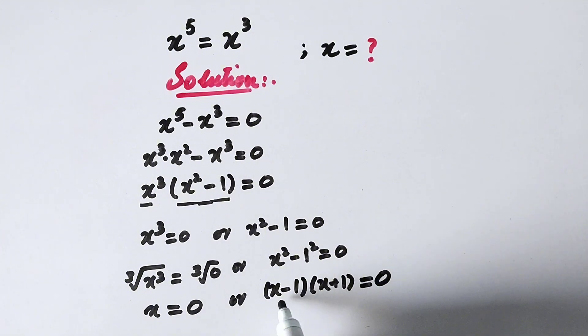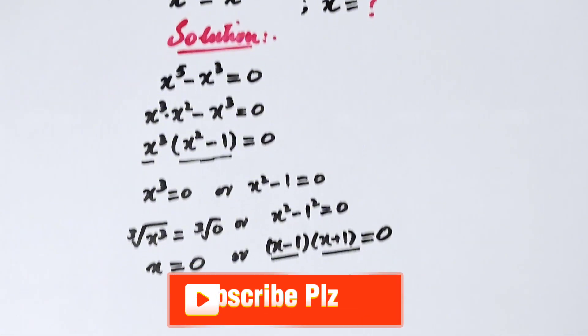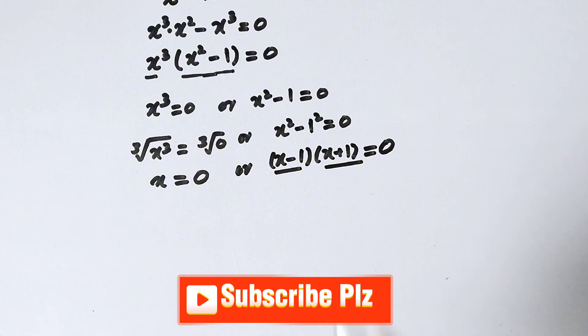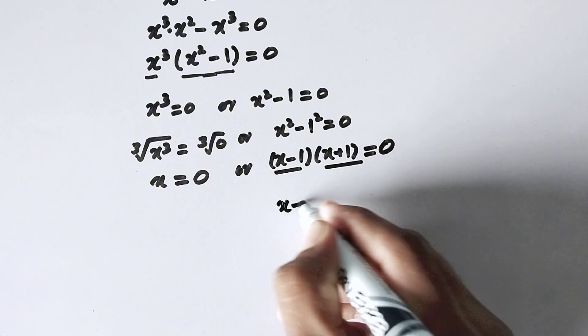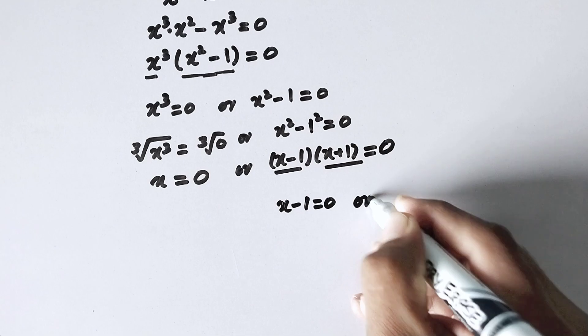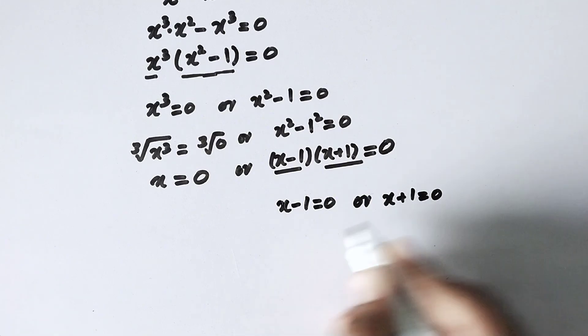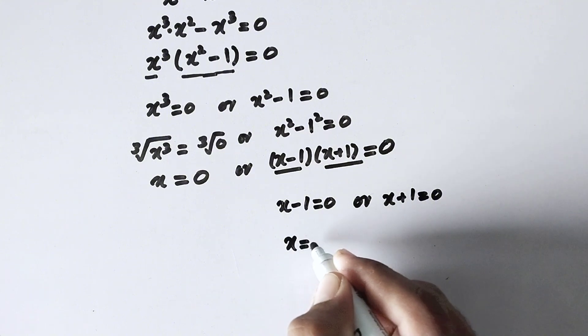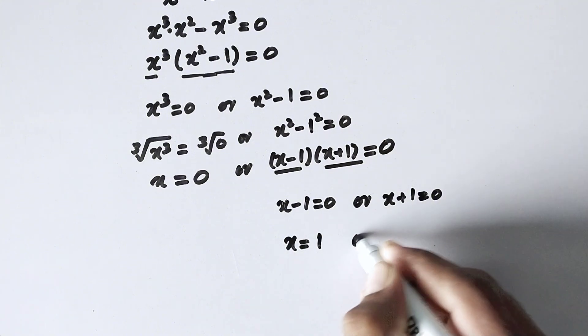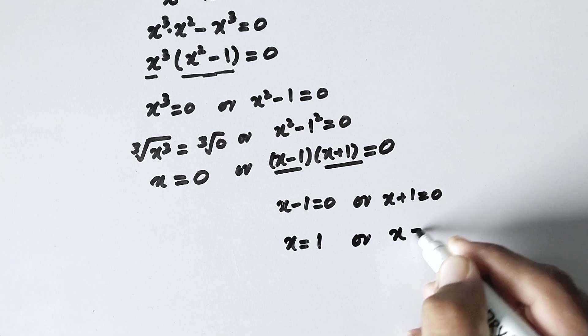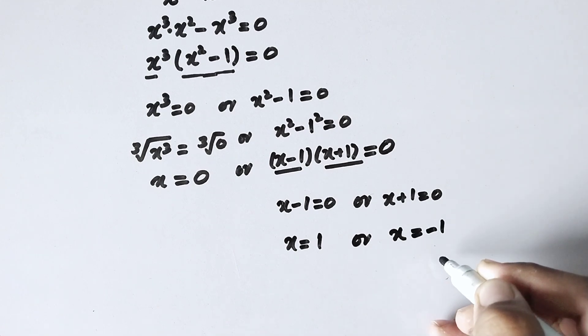Now here again there are two factors that are equal to 0. So here we can write x minus 1 equal to 0, or x plus 1 equal to 0. So here x will be equal to positive 1, or here x will be equal to negative 1.